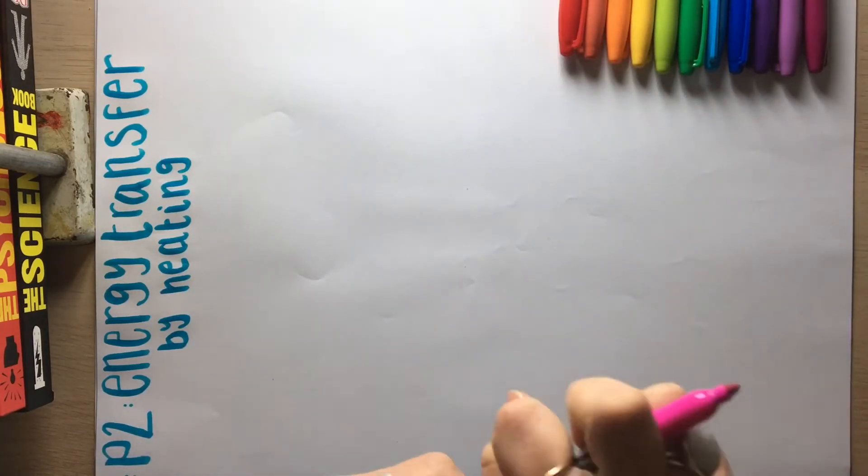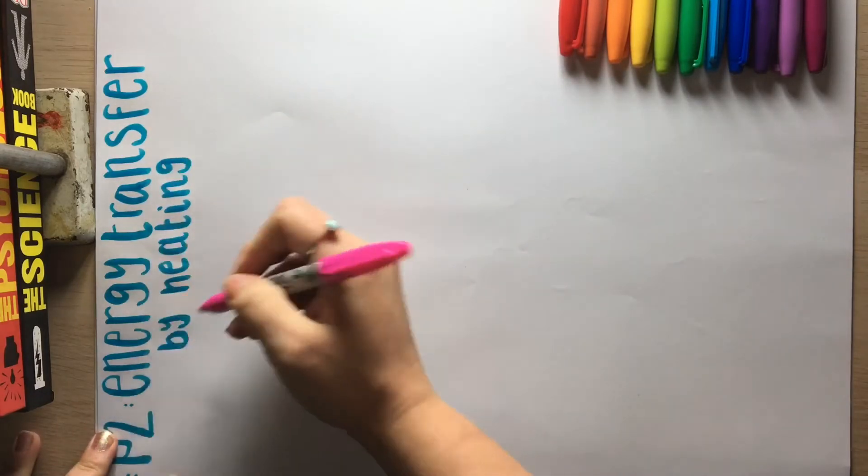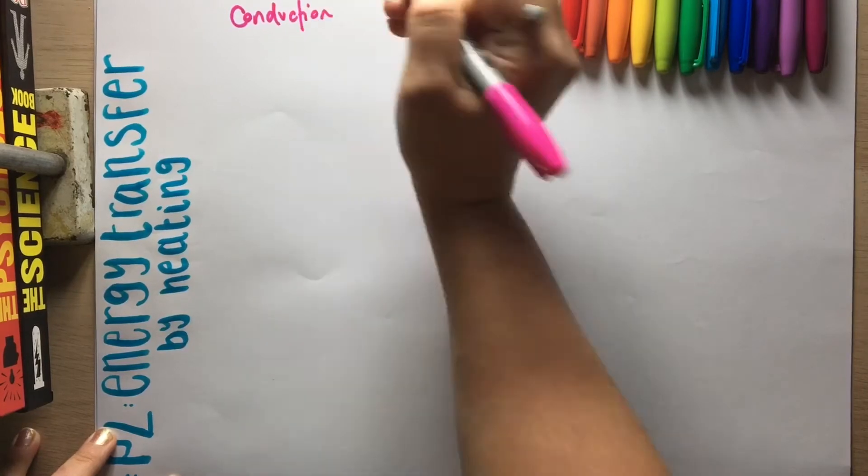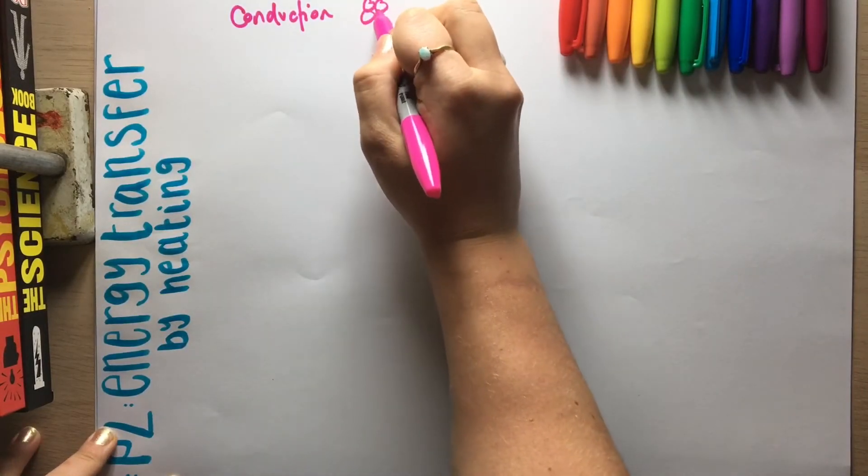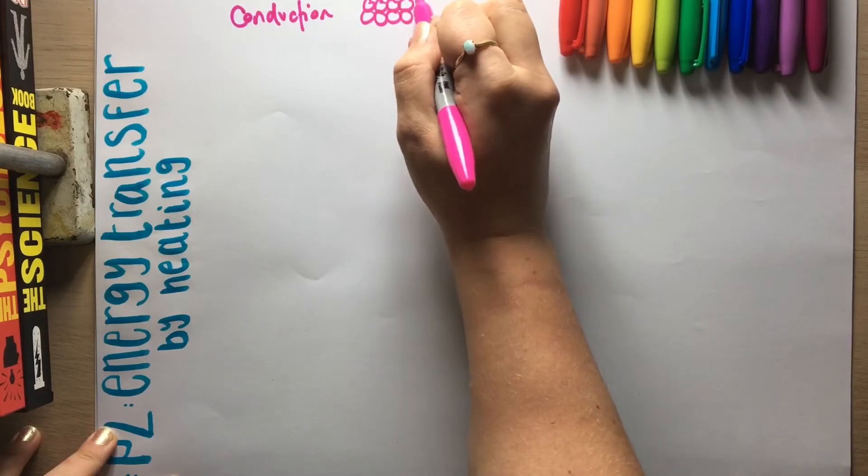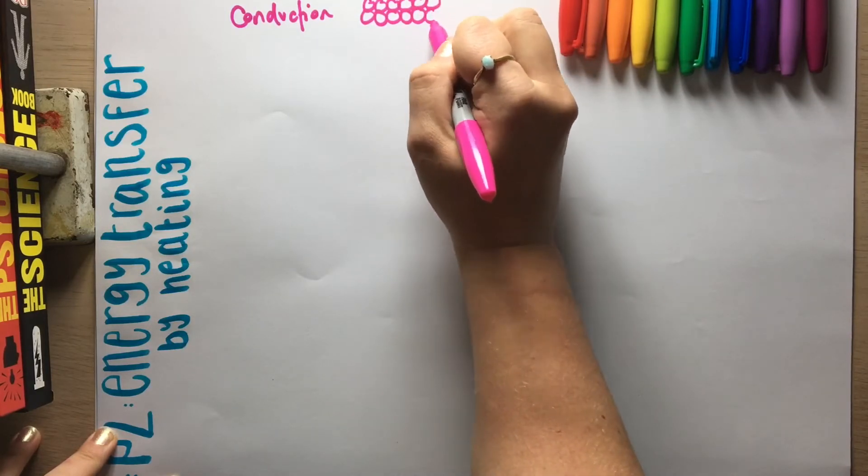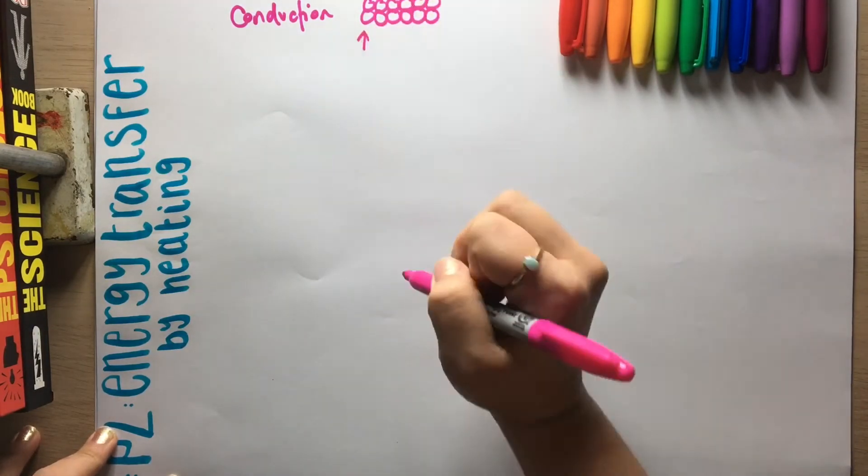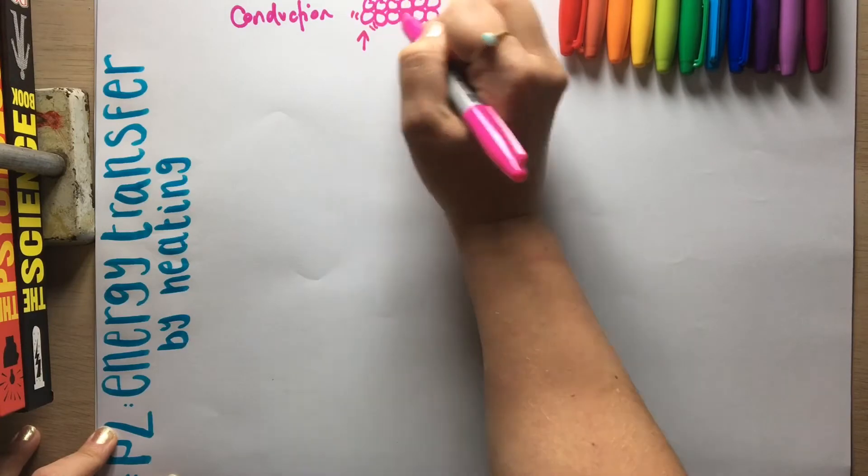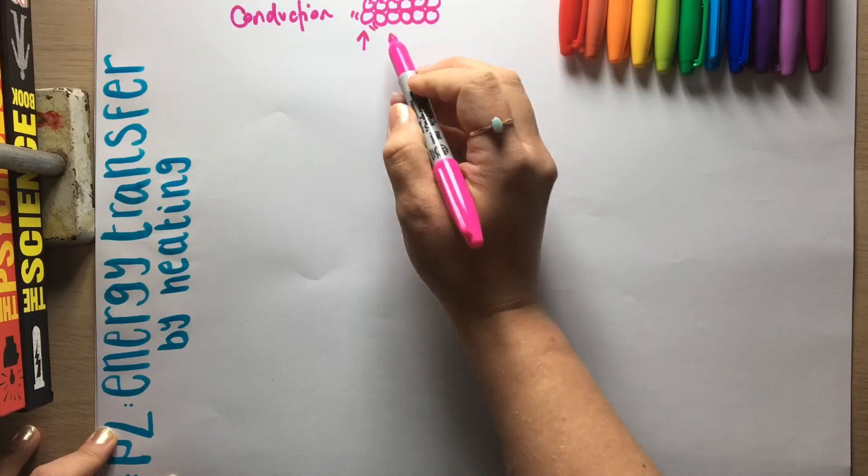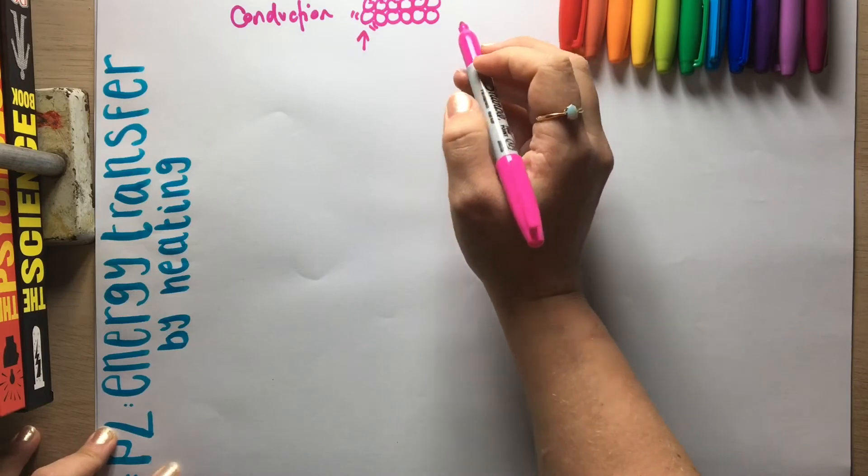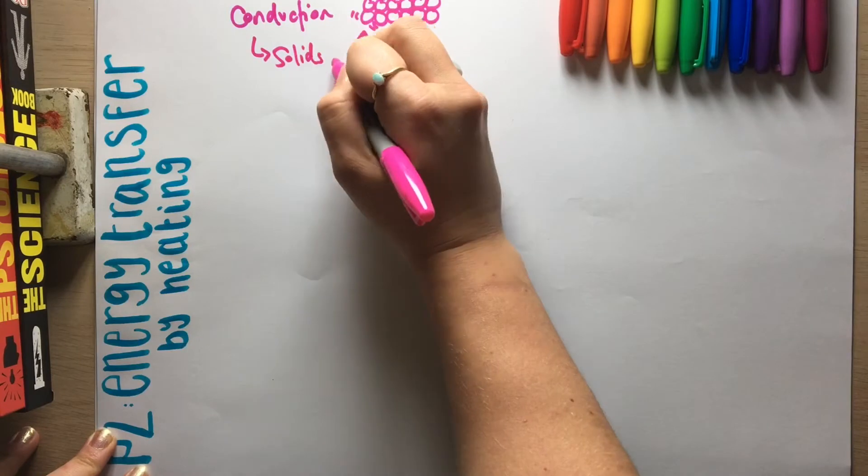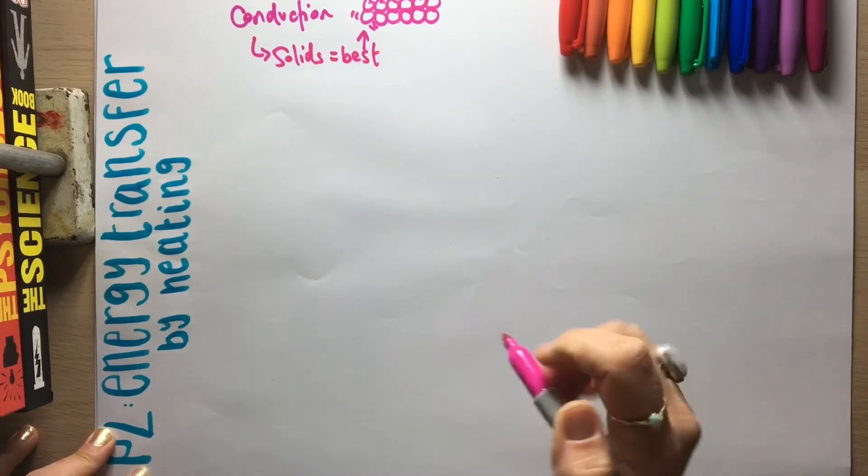So one of the ways that we can transfer energy by heating is through conduction. And conduction is where you have particles that are touching and they can bash into each other. So if I applied some heat, then this particle would start vibrating, which would bash into this particle, which would bash into this particle and so on until the energy is transferred down the substance. So therefore it happens in solids, which happens best in solids.